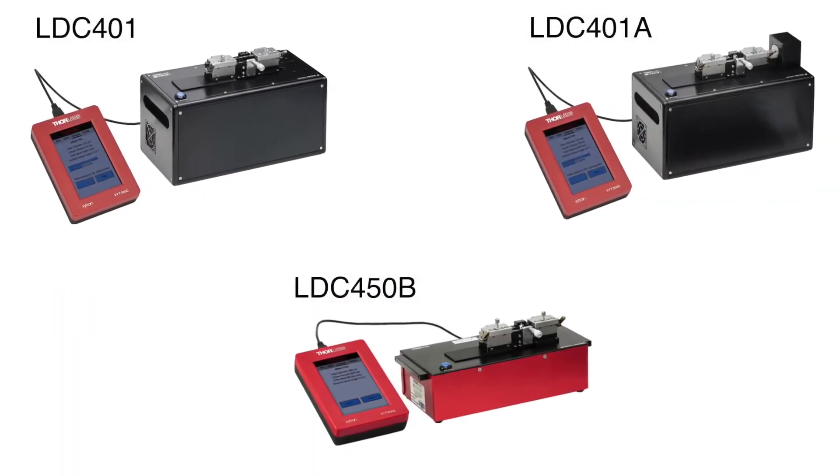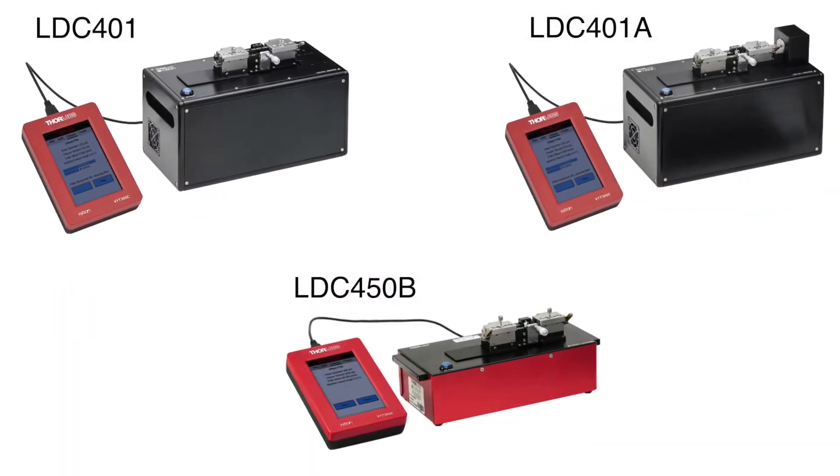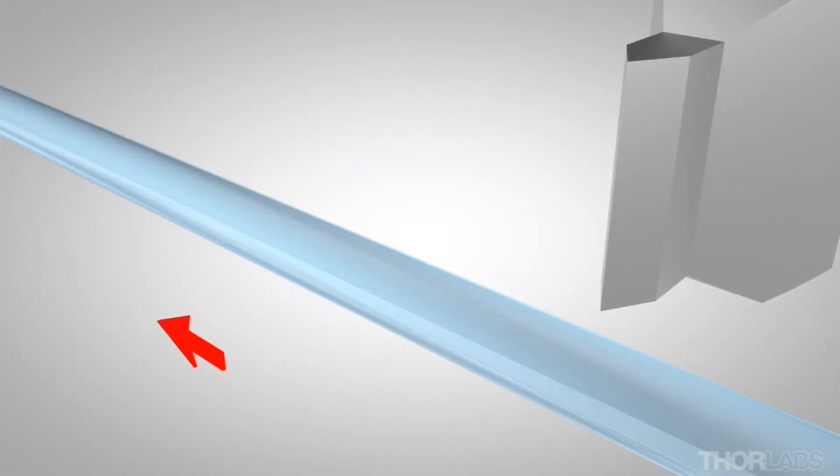Thorlabs Vitran LDC cleavers are capable of high-precision cleaving of glass fibers with diameters ranging from 80 micron to 1250 micron cladding. The cleavers use a tension and scribe technique.